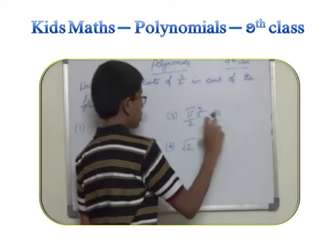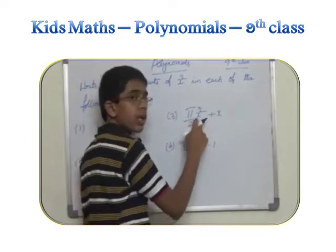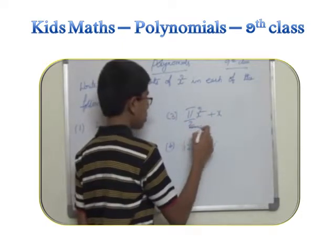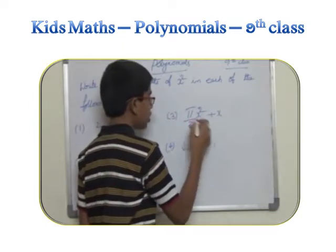And now pi by 2 x squared plus x. We need the coefficient of x squared, and the x squared term is here, and its coefficient is pi by 2.